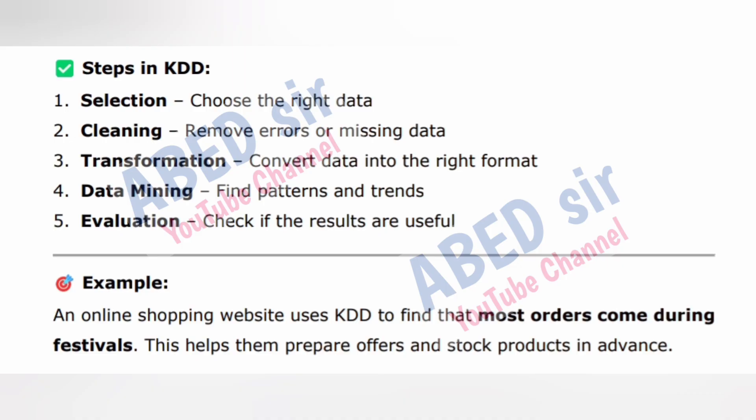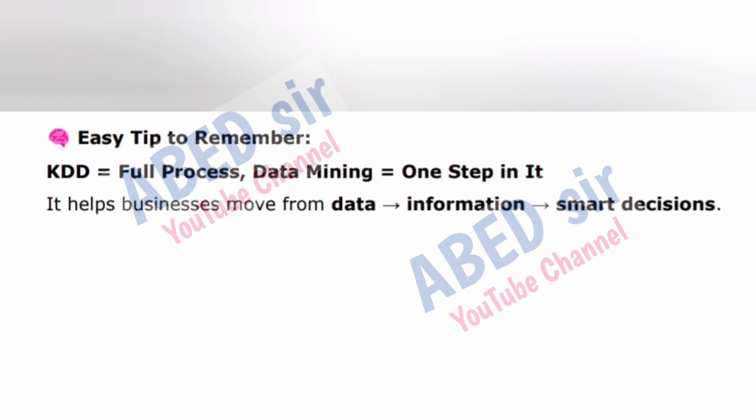Example: an online shopping website uses KDD to find that most orders come during festivals. This helps them prepare offers and stock products in advance. Easy tip to remember: KDD = full process; Data mining = one step in it. It helps businesses move from data to information to smart decisions.